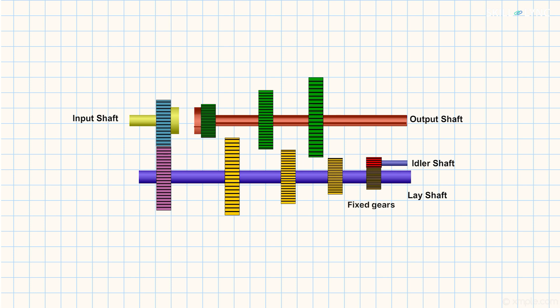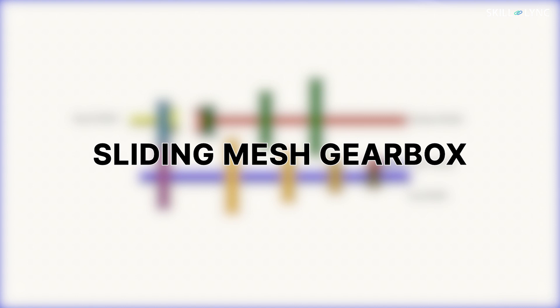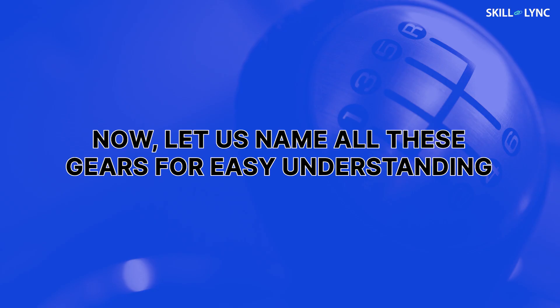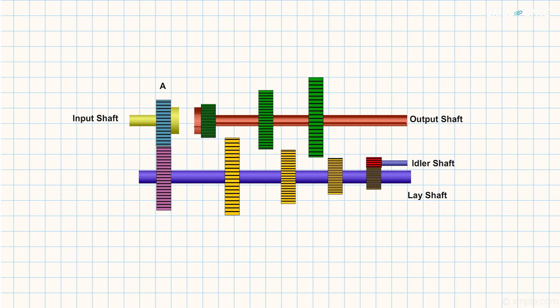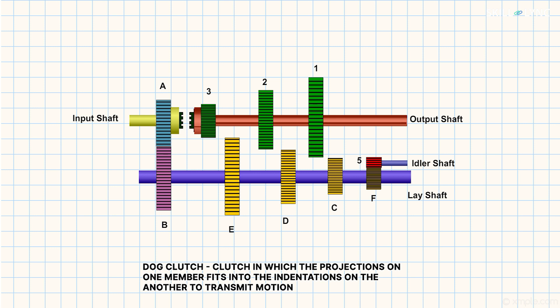The position of the gears on the lay shaft are fixed, whereas the gears on the output shaft can slide over the splines and mesh with their respective shafts. This is why this gearbox is called a sliding mesh gearbox. Now, let us name all these gears for easy understanding. Let's call the gear on the input shaft as A and its respective meshing gear in the lay shaft as B. Let the gears in the output shaft be called as 1, 2, and 3, and the gears in the lay shaft as C, D, E, and F. Let the idler gear be 5 and it will be in constant mesh with the gear F. In addition to all these, there is a dog clutch located between the gears A and 3.